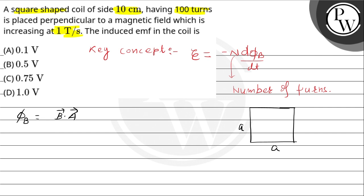Now the question says placed perpendicular to the magnetic field. So the plane of the coil... read the question once more. A square shaped coil of size 10 cm having 100 turns is placed perpendicular to a magnetic field. Okay, so magnetic field is either above the plane of the paper.